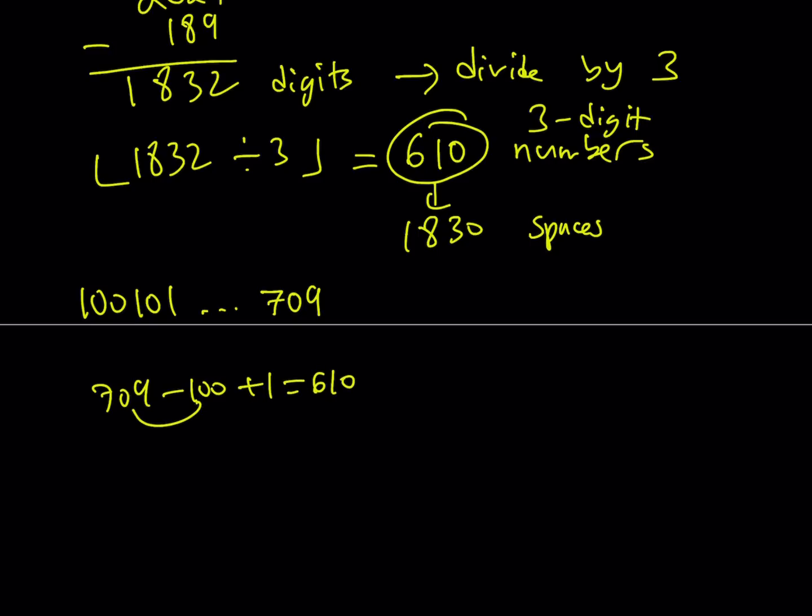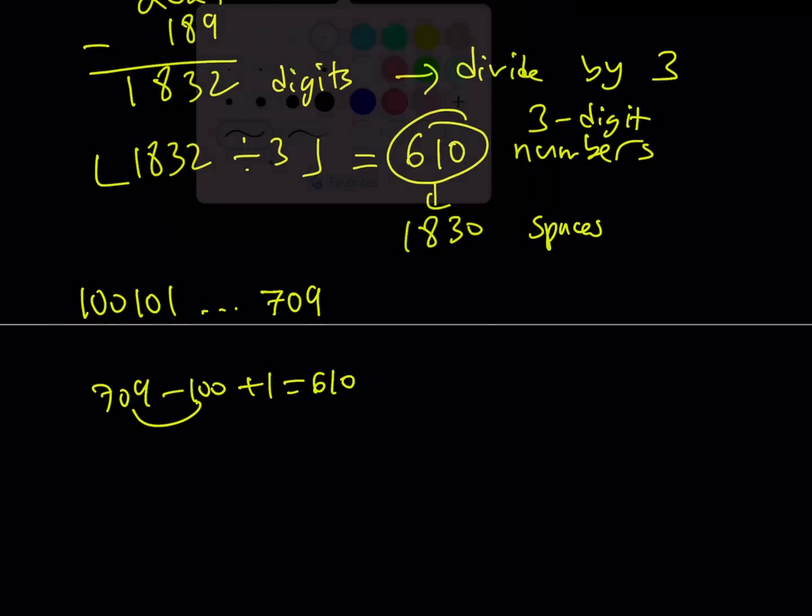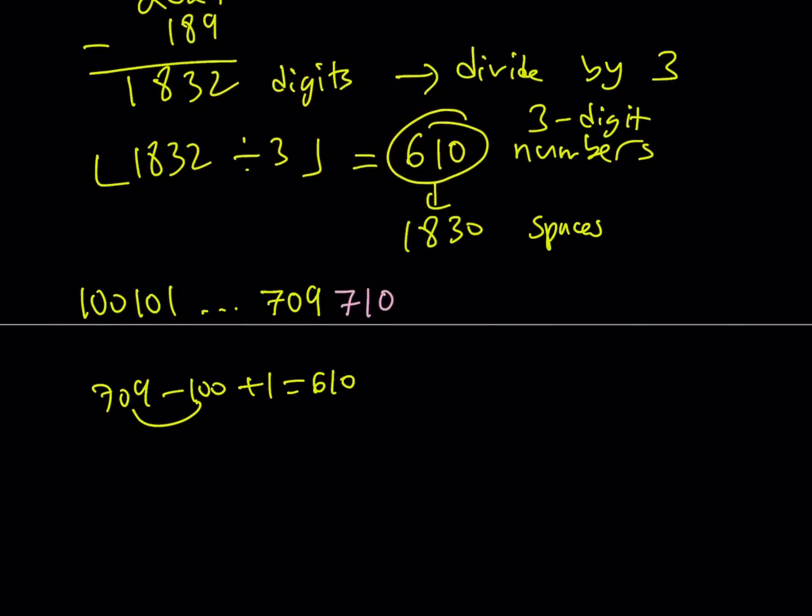Great. So I do need to use 610 numbers, 610 three-digit numbers. And the last number I write is going to be 709. Which means, the next number I'm writing is going to be 710. But remember, I only have two digits that are left over, right? So I need to add two more. And that's going to get me to this digit right here.